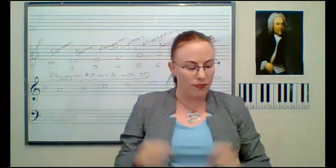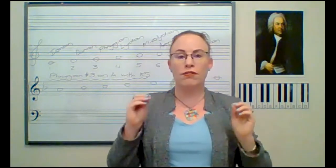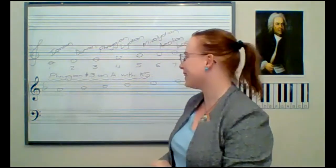And we will always know that we're working with that whenever there's a sharp something in the mode name. So here's an example: the ascending Phrygian sharp three on A with key signature. So I've written this on the board.